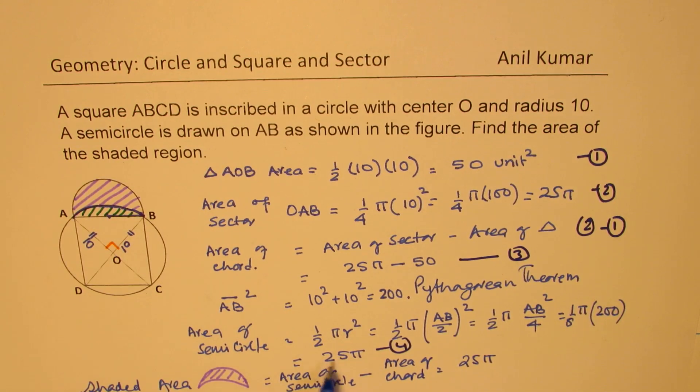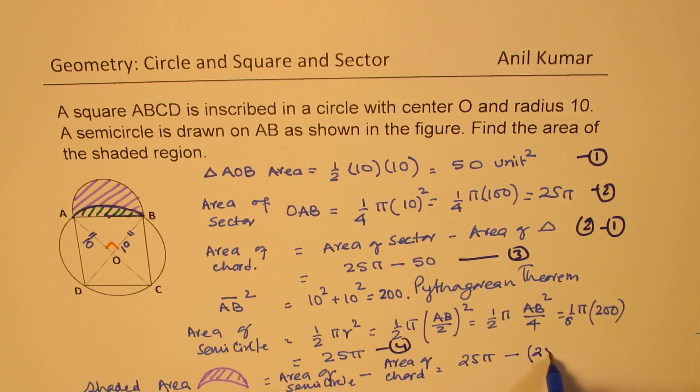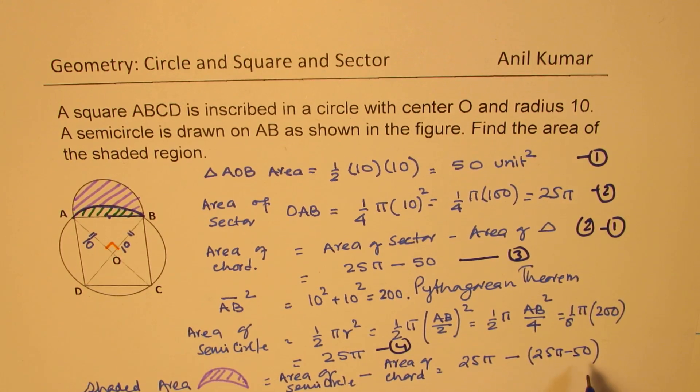So we get this as 25π, the area of semicircle, take away the area of the chord, which is 25π - 50. And when you open this bracket 25π, 25π cancel, and what you get is 50, correct?